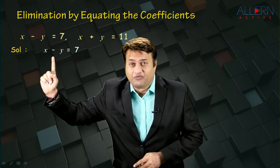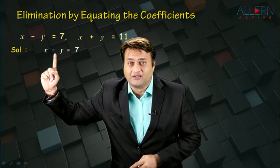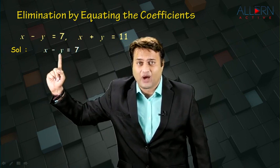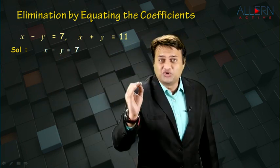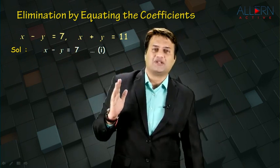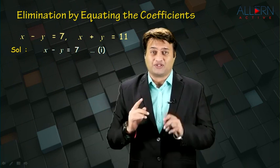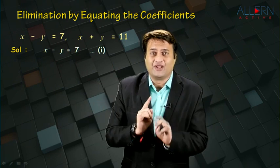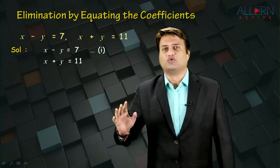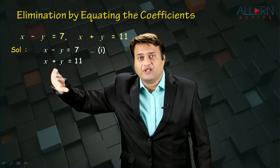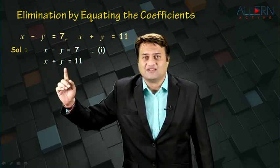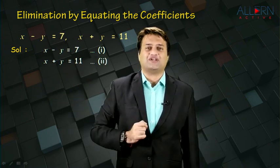Remember, the variables should always be in alphabetical order. First, write the variable x, then the variable y, equal to the constant term. Once you get the equation in the required form, number it as equation number 1 — inside a bracket. Similarly, the second equation x plus y is equal to 11 is already in the required form, with variables on one side and the constant on the other, in alphabetical order. So let this be equation number 2.